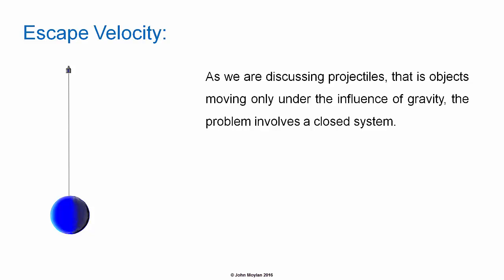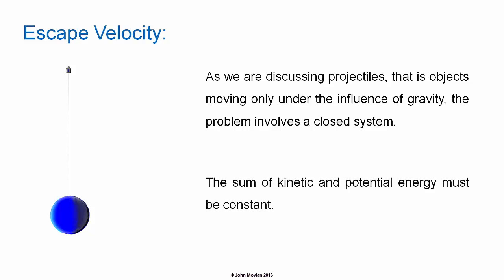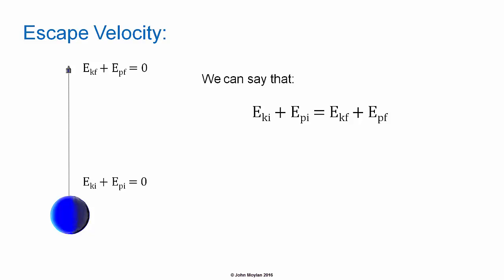As we are talking about projectiles, which are objects moving only under the influence of gravity, the problem involves a closed system. The sum of kinetic and potential energy must be constant, as in a closed system there are no energy inputs. Written as an equation: E subscript KI plus E subscript PI equals E subscript KF plus E subscript PF.